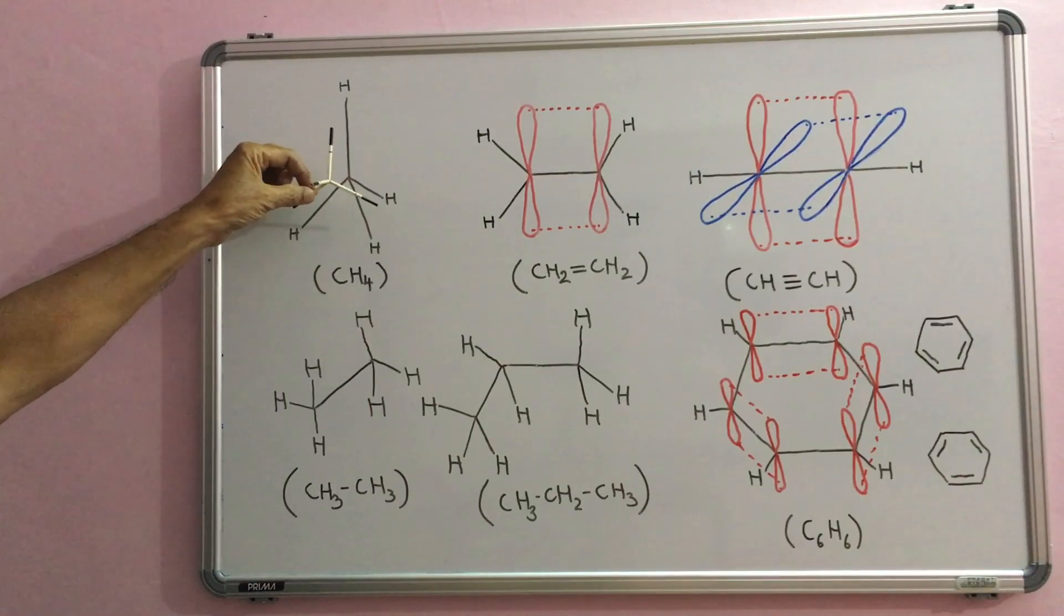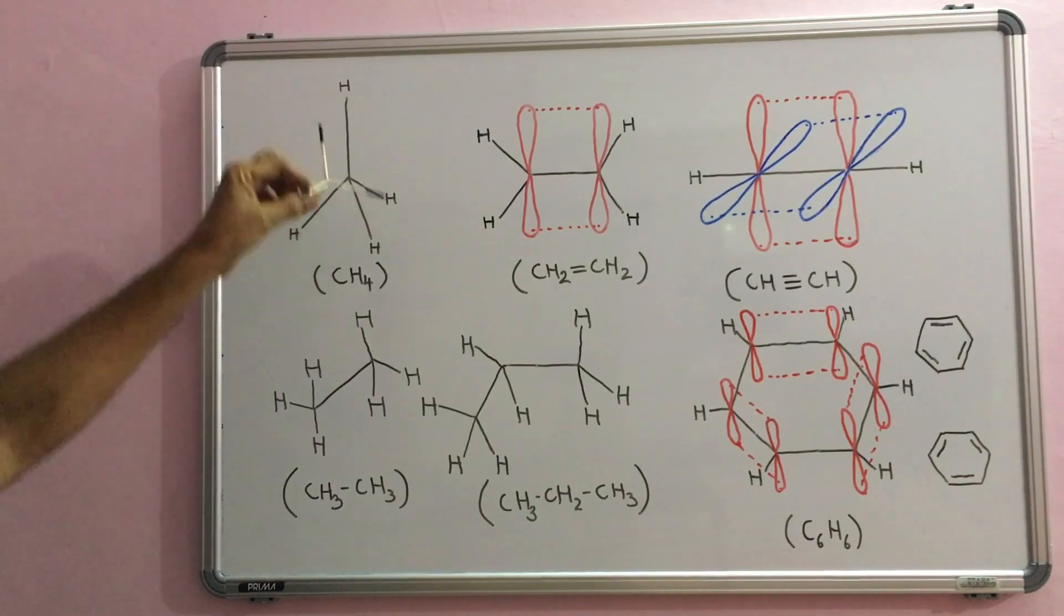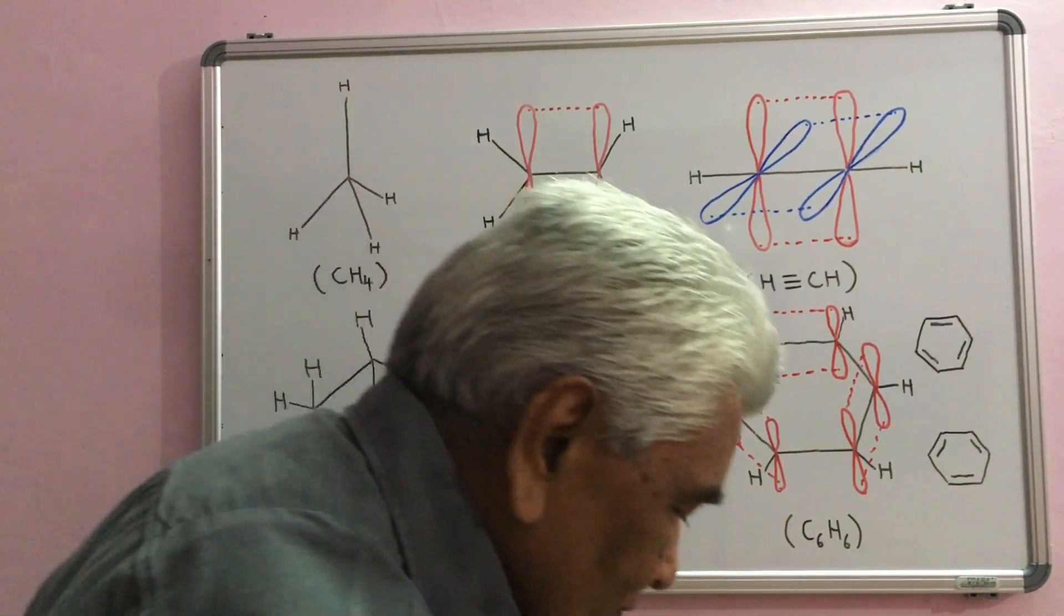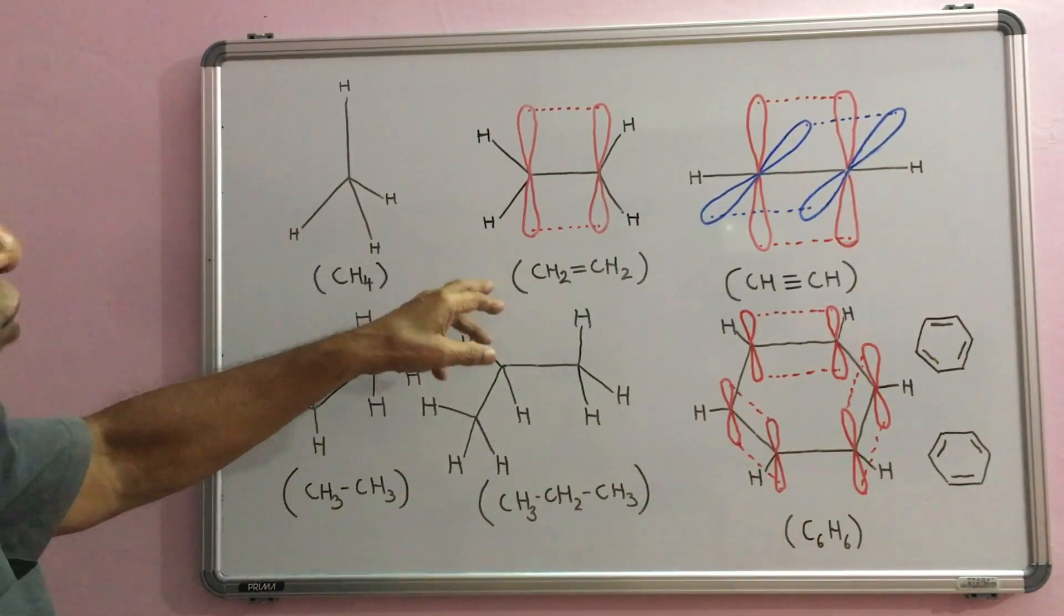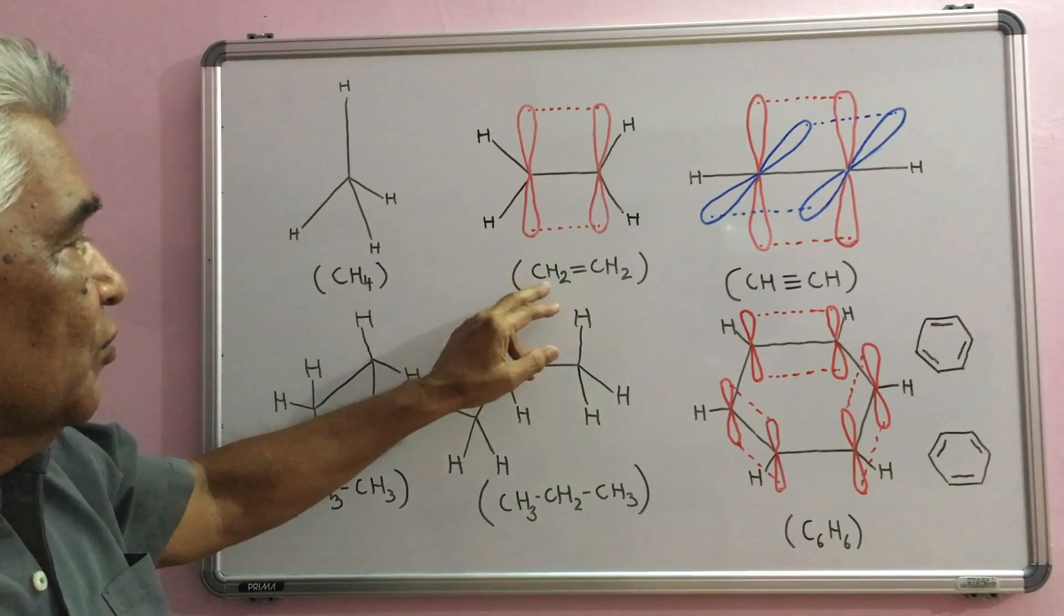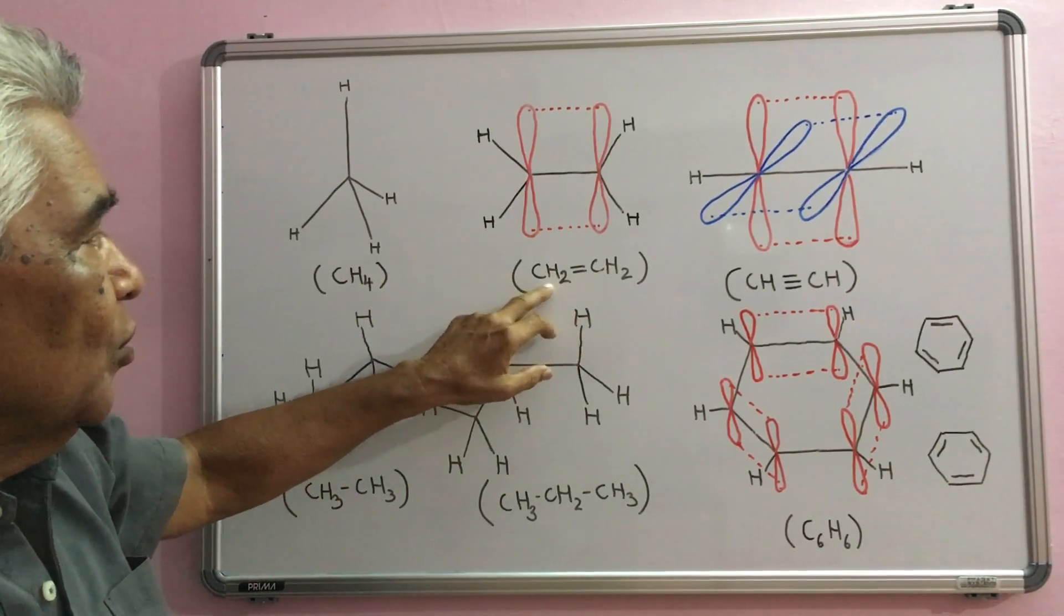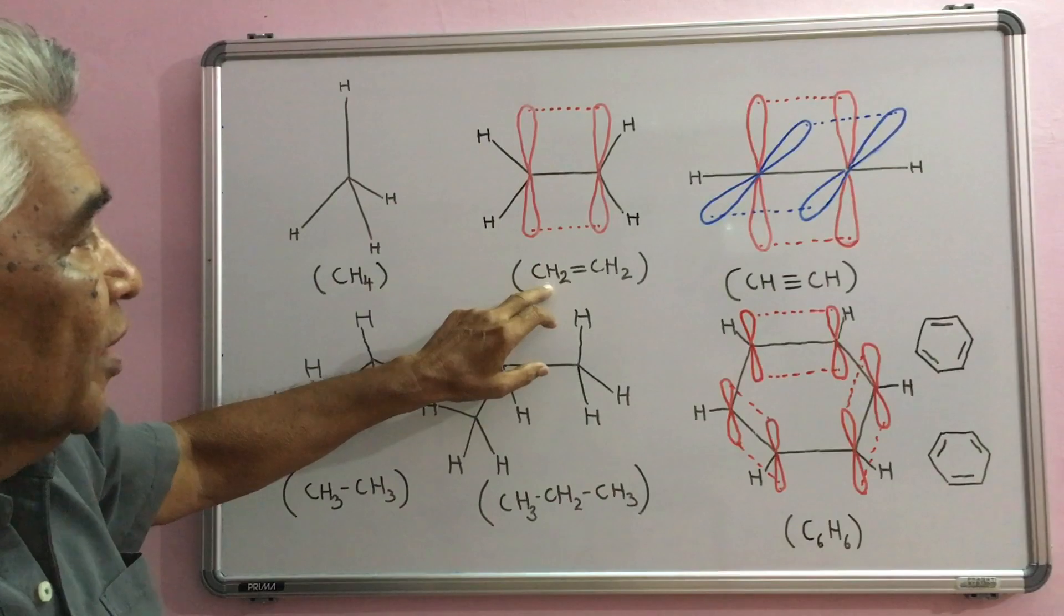sp2 hybridized carbon, which is ethylene - both are sp2 because they are joined to three atoms.